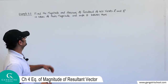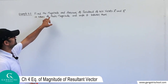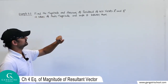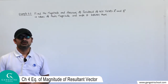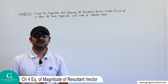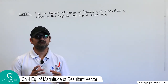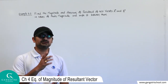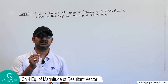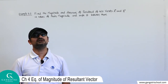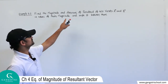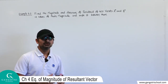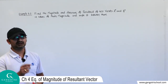The question is: find the magnitude and direction of the resultant of two vectors A and B. Suppose we have two vectors A and B, and we would like to find their resultant vector — its magnitude as well as direction — in terms of their magnitudes and the angle theta between them.